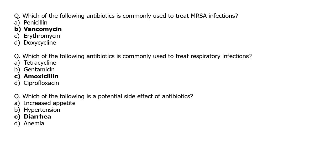Now a few questions for competitive exams. Which antibiotic is commonly used to treat MRSA — methicillin-resistant Staphylococcus aureus — infections? The answer is vancomycin. Which antibiotic is commonly used to treat respiratory infections? The answer is amoxicillin. What is a potential side effect of antibiotics? The answer is diarrhea, because antibiotics kill gut microbes, causing an imbalance in the digestive system.